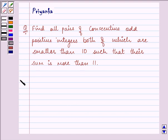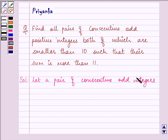Now let us discuss this question stepwise. Let a pair of consecutive odd integers be x and x plus 2.